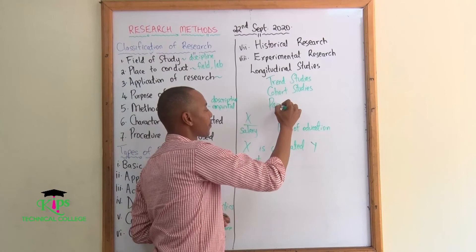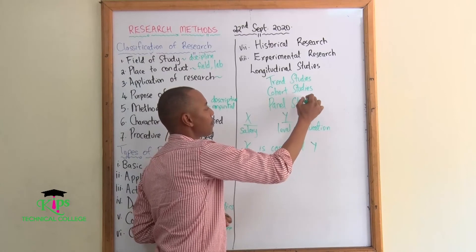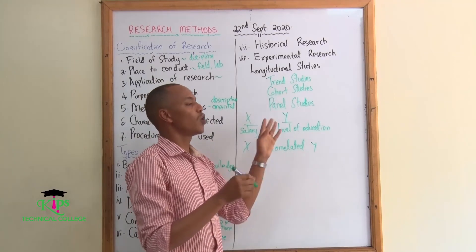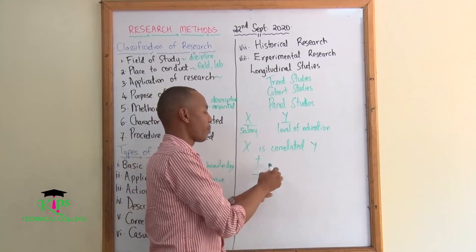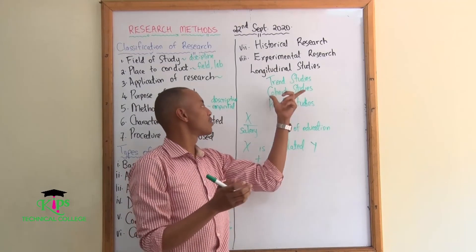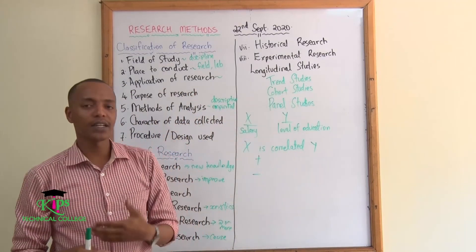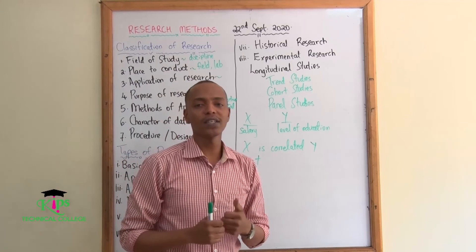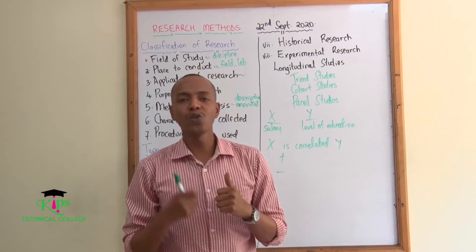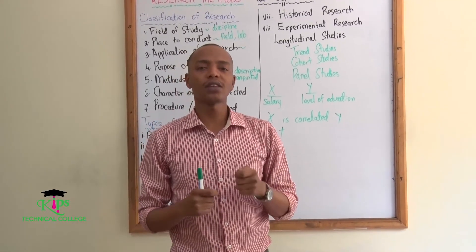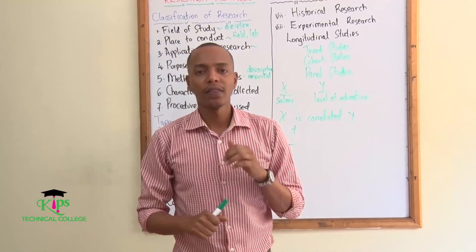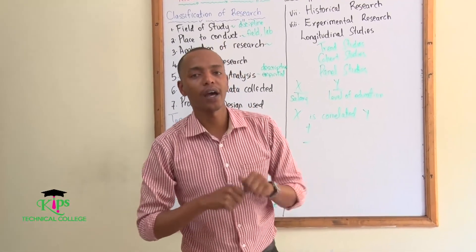Then we have panel studies. Panel studies mix both cohort and trend studies, because trends look at how things have been happening from, say, 1985 to 2000, and panel studies combine both approaches. That's all for today's class. Next time, we'll introduce the third topic where we'll be talking more about research methods. Thank you and have a great week ahead.